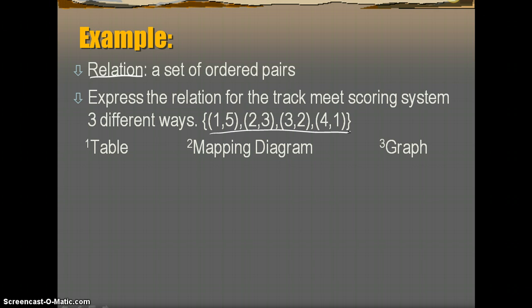So the example itself says express the relation for the track meet scoring system three different ways. And the scores that we have are (1,5), (2,3), (3,2), and (4,1). The first thing that you need to understand is that each ordered pair is representative of X, Y, which is a point.